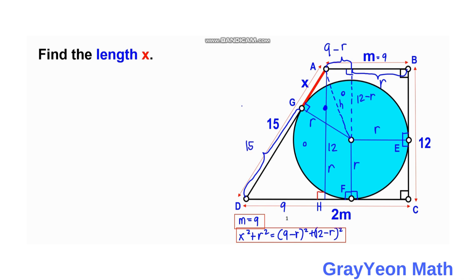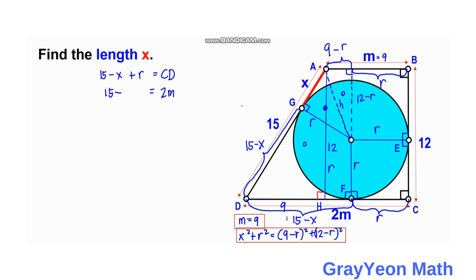Setting this equation aside for now, we note that the length DF equals 15 minus X, because G and F are tangent points with external tangent at D. Adding 15 minus X plus R gives the total length of segment CD. So CD = 15 − X + R. But CD = 2M = 18, so: 15 − X + R = 18.